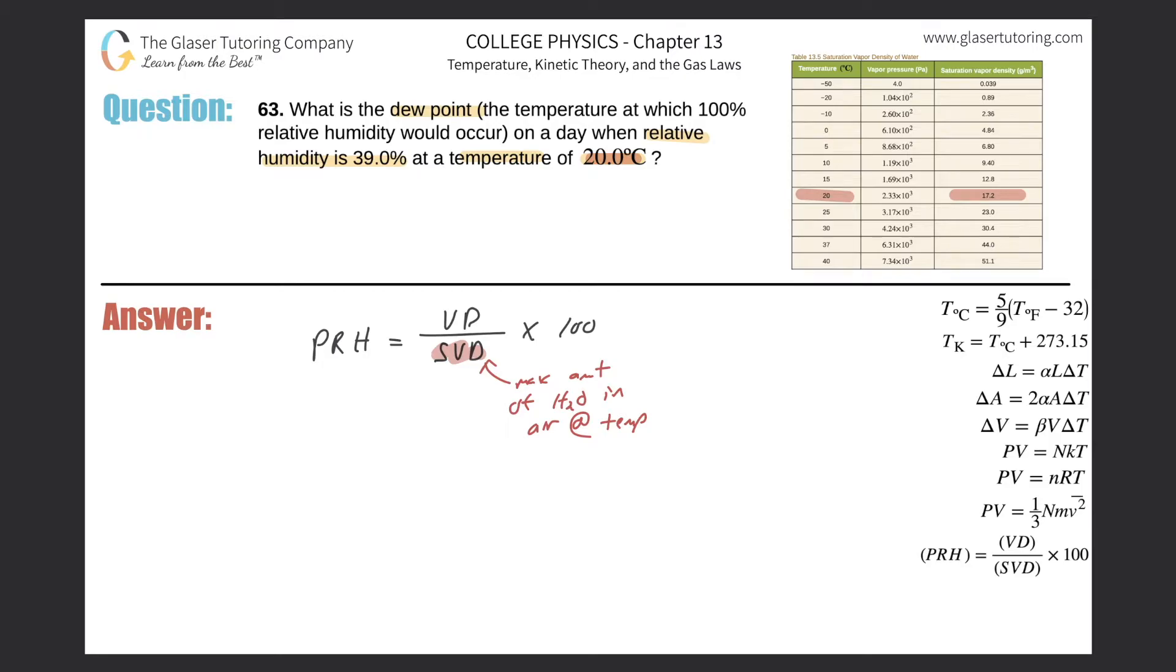Basically what we realize is that I can plug in the percent relative humidity of 39. 39 equals the vapor density which we don't know, but that's what we can solve for, divided by that saturation vapor density. Remember this is the maximum density of water vapor that the air can hold, multiplied by 100.